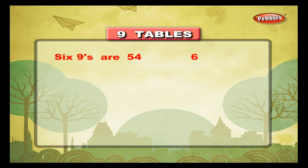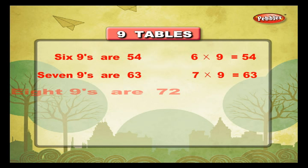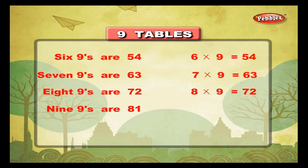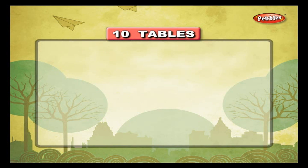6 nines are 54, 6 into 9 is equal to 54. 7 nines are 63, 7 into 9 is equal to 63. 8 nines are 72, 8 into 9 is equal to 72. 9 nines are 81, 9 into 9 is equal to 81. 10 nines are 90. 10 tables.